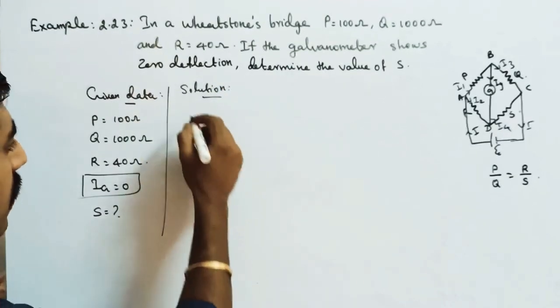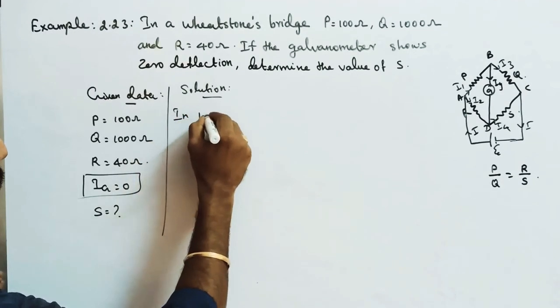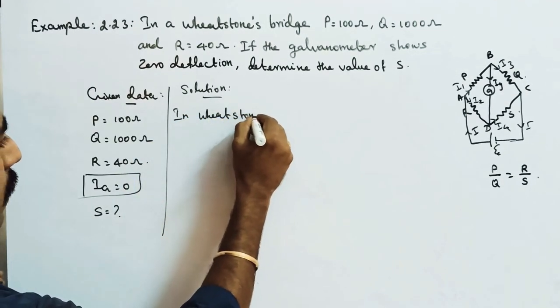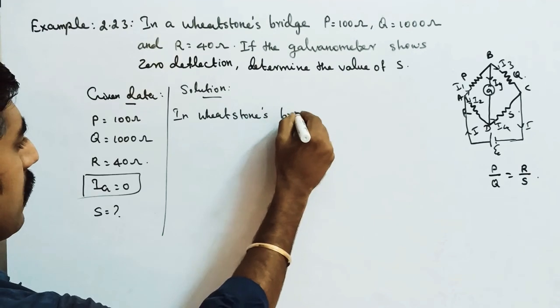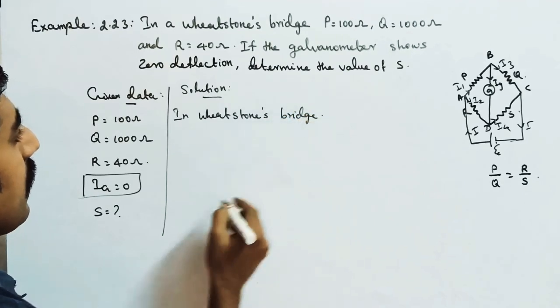As you can see, this is the solution. In Wheatstone's bridge, we solve for the value of S.